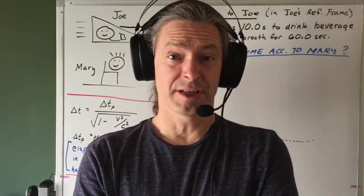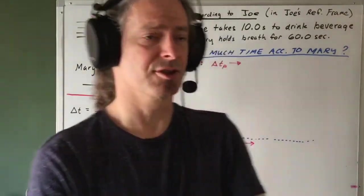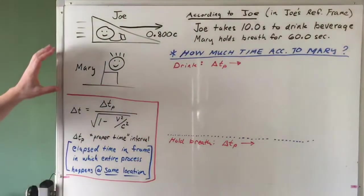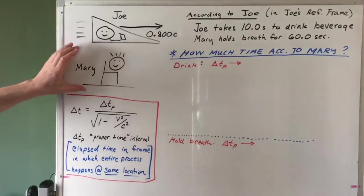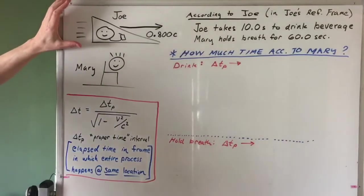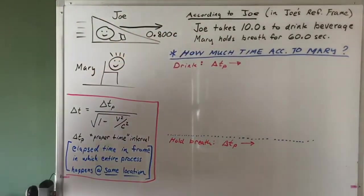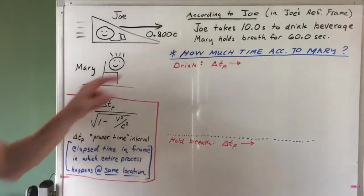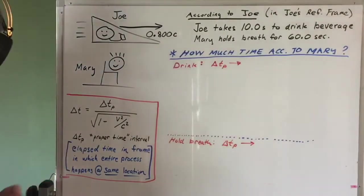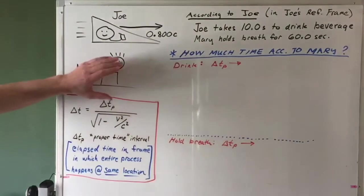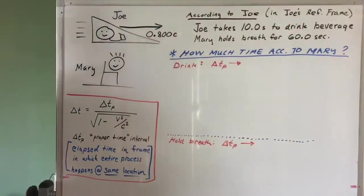Hi everybody. In this video, I want to do an example problem involving time dilation. Imagine that Mary is sitting here in a chair, and imagine that Joe is on a spacecraft zooming to the right with a speed of 0.800C relative to Mary, where C is the speed of light in a vacuum, 3 times 10 to the 8th meters per second. So relative to Mary, Joe's zooming to the right at 0.8 of the speed of light.